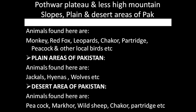These are the animals found in the mountain slope area. In Margalla Hills there are monkeys and leopards. In the plain areas of Pakistan, the animals include jackals, hyenas, and wolves. Jackals, which we call gidars, hyenas, wolves, and various birds are found in the plain areas of Pakistan.